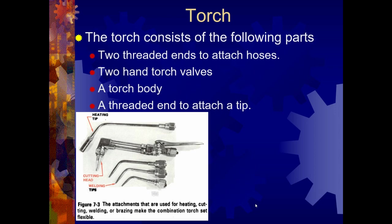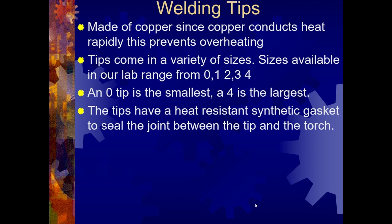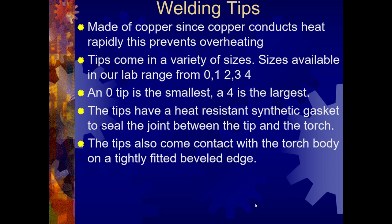An oxyacetylene torch consists of a few parts. We have the threaded ends that attach to the hoses and then the end that attaches to the tips. On that torch body we can apply both a cutting head or a welding tip, and at the top of this picture you see a heating tip which is commonly called a rose bud. Welding tips are made of copper, which conducts heat well and prevents overheating because of the way it disperses heat. Tips come in a variety of sizes — zero is the smallest tip, and you can actually get a double ought, on up to four which is the largest. Tips have a heat-resistant gasket to seal up between the tip and the torch. It's important to know that's there because it does age over time and sometimes needs to be replaced.